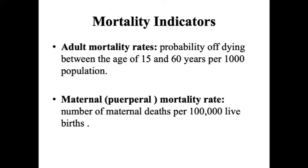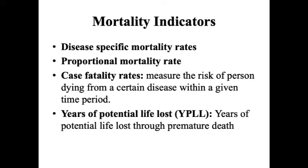Maternal mortality rate is the number of maternal deaths per 1 lakh live births. Disease-specific mortality rates — for example, out of 100 deaths in one month, how many are due to cardiovascular diseases. Proportional mortality rate refers to what proportion of total deaths is contributed by a specific disease, specific age, or specific gender. For example, 71 percent of total deaths worldwide are due to non-communicable diseases.